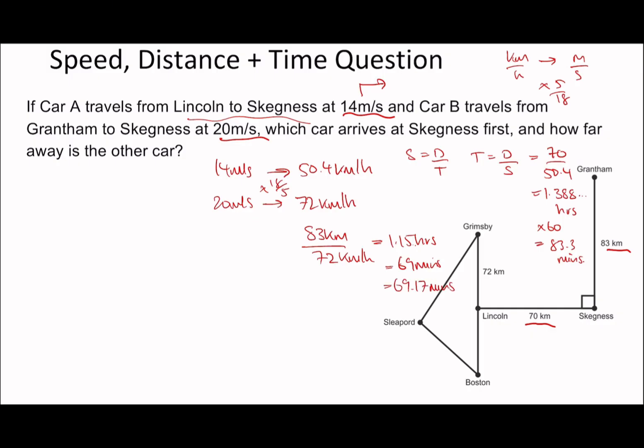We know the second journey, Car B, arrives at Skegness faster. But this is the tricky bit - how far away is the other car? The question means how far away is the other car at the point of arrival, when Car B arrives.